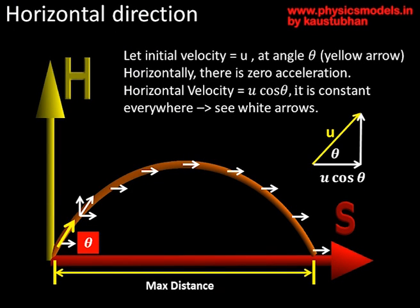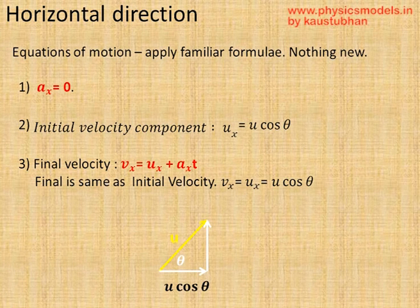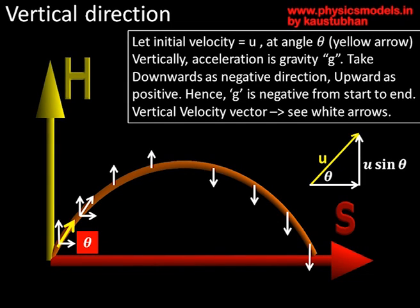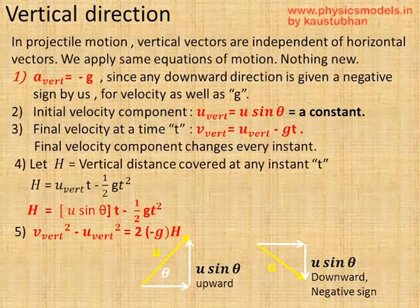If we draw that in graph form, you can see the horizontal velocity shown by white arrows — they are constant. Therefore, the acceleration in the x direction, ax, is 0, and you can apply the equation v equals u plus at. In the vertical direction, the initial velocity is upwards, as shown by the white arrows, and then the velocity becomes downward. You can apply the acceleration as minus g, since the ball is always being pulled down by gravity.